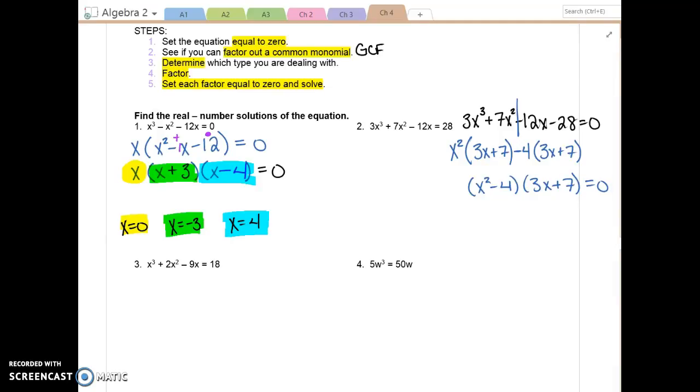Am I done factoring that one? No. So x squared minus 4 factors further into x plus 2, x minus 2, 3x plus 7 equals 0. There are three factors here. My yellow factor is x plus 2. My green factor is x minus 2. And my blue factor is 3x plus 7.